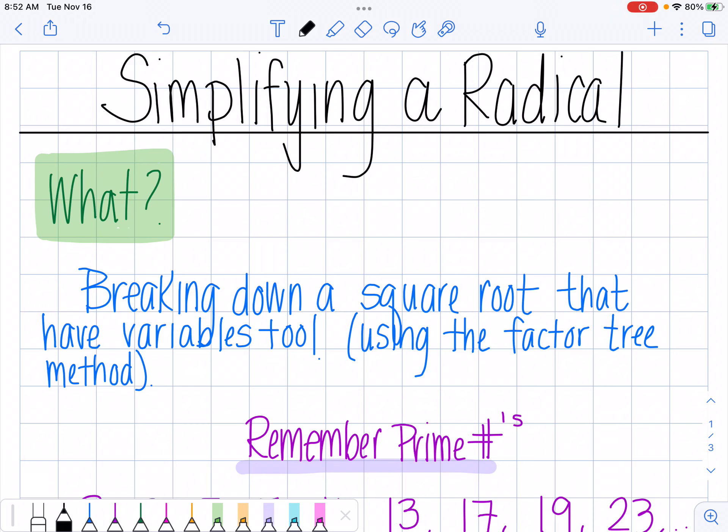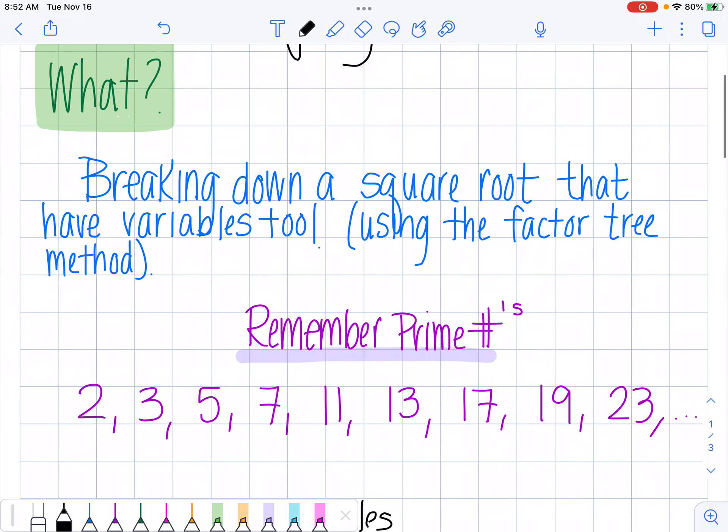Hi there! In this video we're going to talk about how to simplify a radical and what does that mean? What we're going to do is underneath the square root we're going to break it down, and these square roots are also going to have variables too. So we're going to talk about how to simplify the numbers underneath the square root and the variables, and we're going to use the factor tree method. Remember, a prime number is a number that only one times itself gives you that number. I just made a list - usually you don't really have to know any higher than 11. So I have four examples for you, so let's get to work.